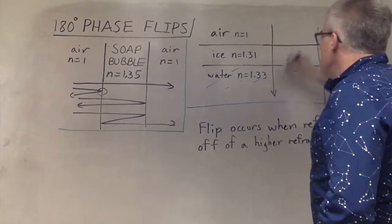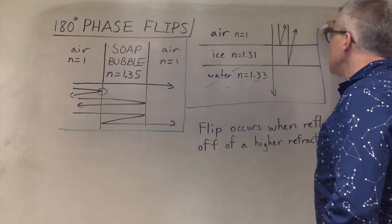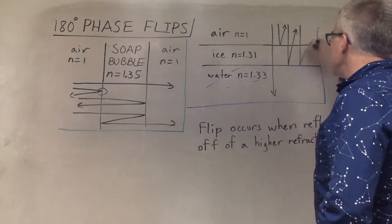Light could go straight through, it could reflect off the top, it could reflect off the second surface, it could bounce twice and go through.